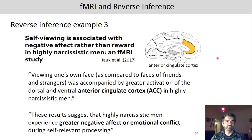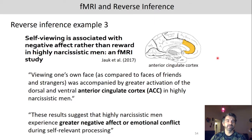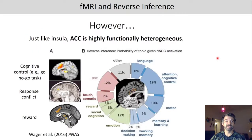In another study, self-viewing was found to be associated with negative affect rather than reward in highly narcissistic men. The authors found that viewing one's own face compared to faces of friends and strangers was accompanied by greater activation in the dorsal and ventral anterior cingulate cortex (ACC) in highly narcissistic men, and they concluded this suggests greater negative affect or emotional conflict during self-relevant processing. But just like the insula, the ACC is highly functionally heterogeneous and is involved in many different processes.